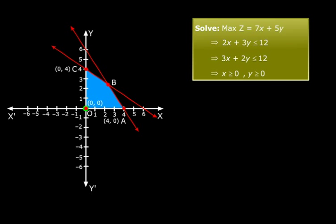We can find the coordinates of point B by solving these two equations: 3x plus 2y equals 12 and 2x plus 3y equals 12. When you do that, you get the answer as (12/5, 12/5). So now we know the corner points.